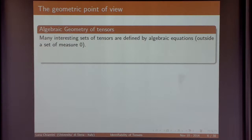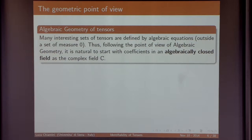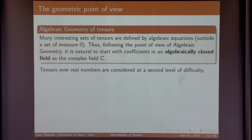Why use algebraic geometry for tensors? Many interesting sets of tensors are defined by algebraic equations, at least inside some small set. Since we have algebraic equations, the first thing to look at is what happens over an algebraically closed field, because algebraic equations are easier in that setting. From this point of view, tensors of real numbers are considered at a second level of difficulty. So we first see what happens in the complex case — everything I am going to say is over the complex field.